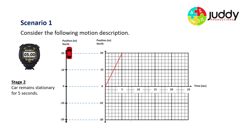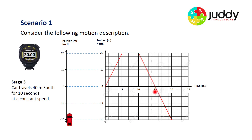Stage two: the car remains stationary for five seconds. For the next five seconds the vehicle stays at 20 meters north, represented by a flat section showing no movement from five to ten. Stage three: the car travels 40 meters south for 10 seconds at a constant speed — starting at 20 meters north at the 10-second mark and traveling to 20 meters south. Stage four: the car remains stationary for five seconds, giving us a flat section. That's our first scenario.